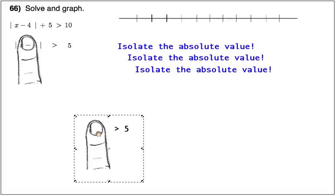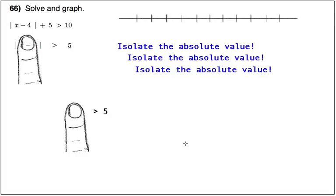What's ever under my finger has to be greater than 5. If that happens then the inequality is true. But again since we're dealing with absolute value, we have a dual situation, a split personality we have to deal with.